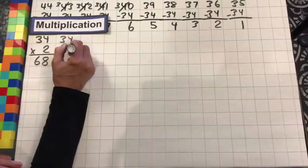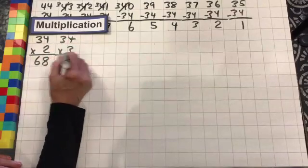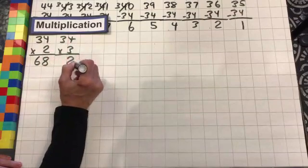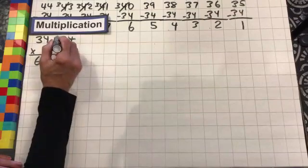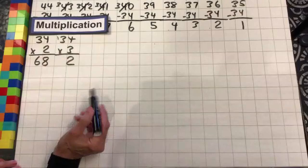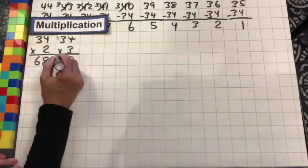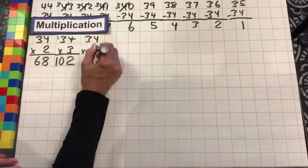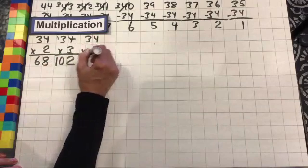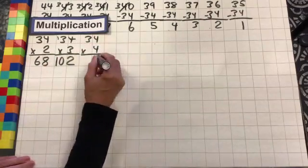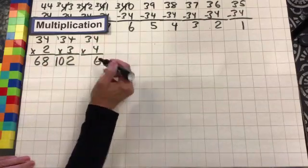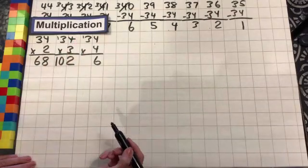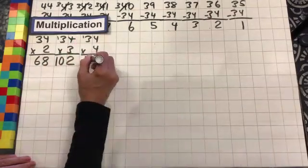34 times 3: 3 times 4 is 12 — drop the 2, carry the 1; 3 times 3 is 9, plus 1 is 10. 34 times 4: 4 times 4 is 16 — drop the 6, carry the 1; 4 times 3 is 12, plus 1 is 13.